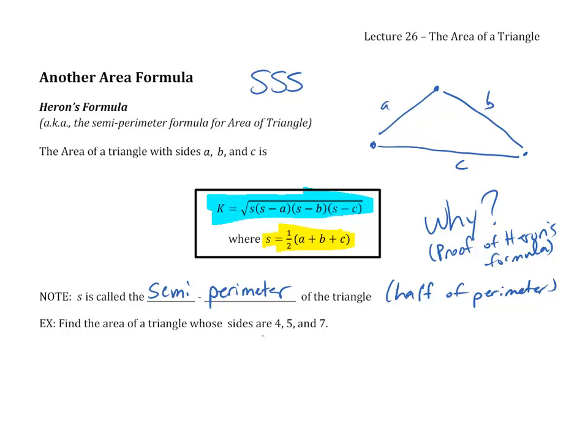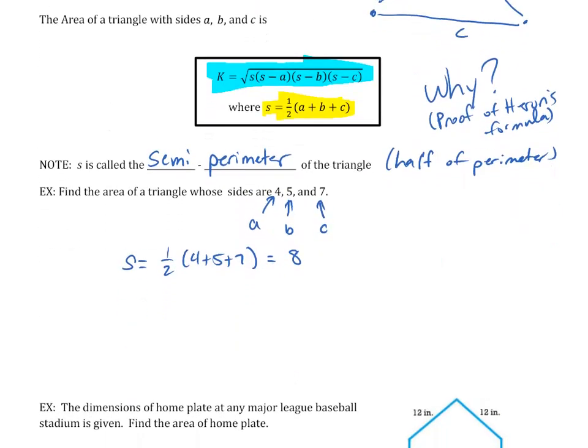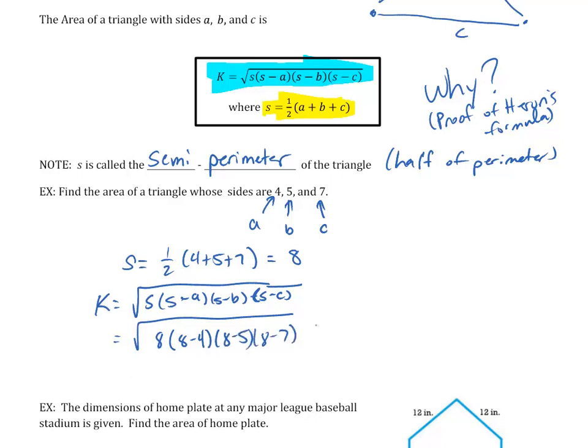So let's apply Heron's formula. If I call 4 my A and 5 is B and 7 is C, then first let's find the semi-perimeter, which would be one-half of 4 plus 5 plus 7. 4 plus 5 is 9, 9 plus 7 is 16, half of 16 is 8. So your semi-perimeter is going to be 8. Now we're going to take that the area is the square root of S times S minus A, S minus B, S minus C. So that's 8 times 8 minus 4, 8 minus 5, and 8 minus 7. That would be the square root of 8 times 4 times 3 times 1. 8 times 4 is 32, 32 times 3 is 96.